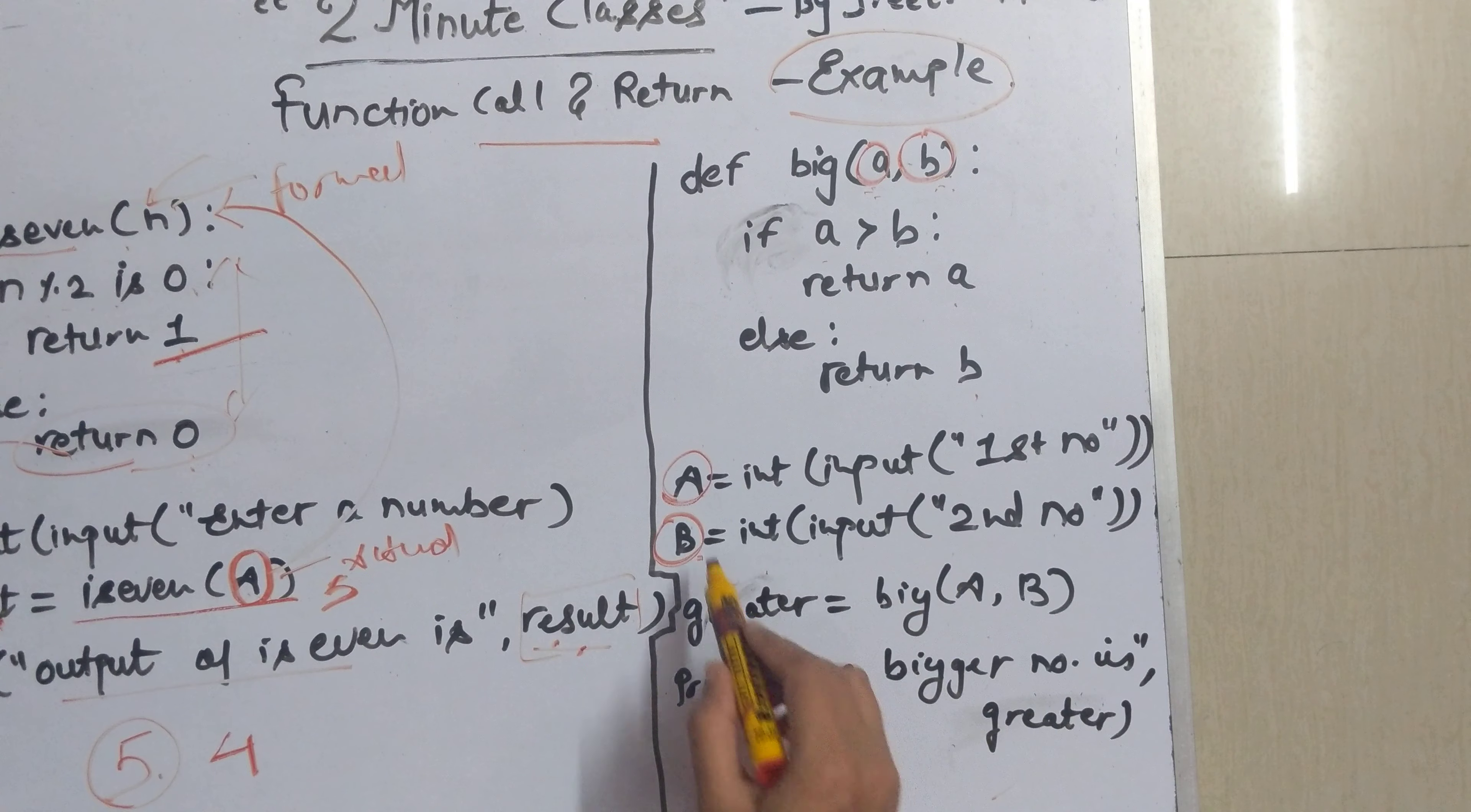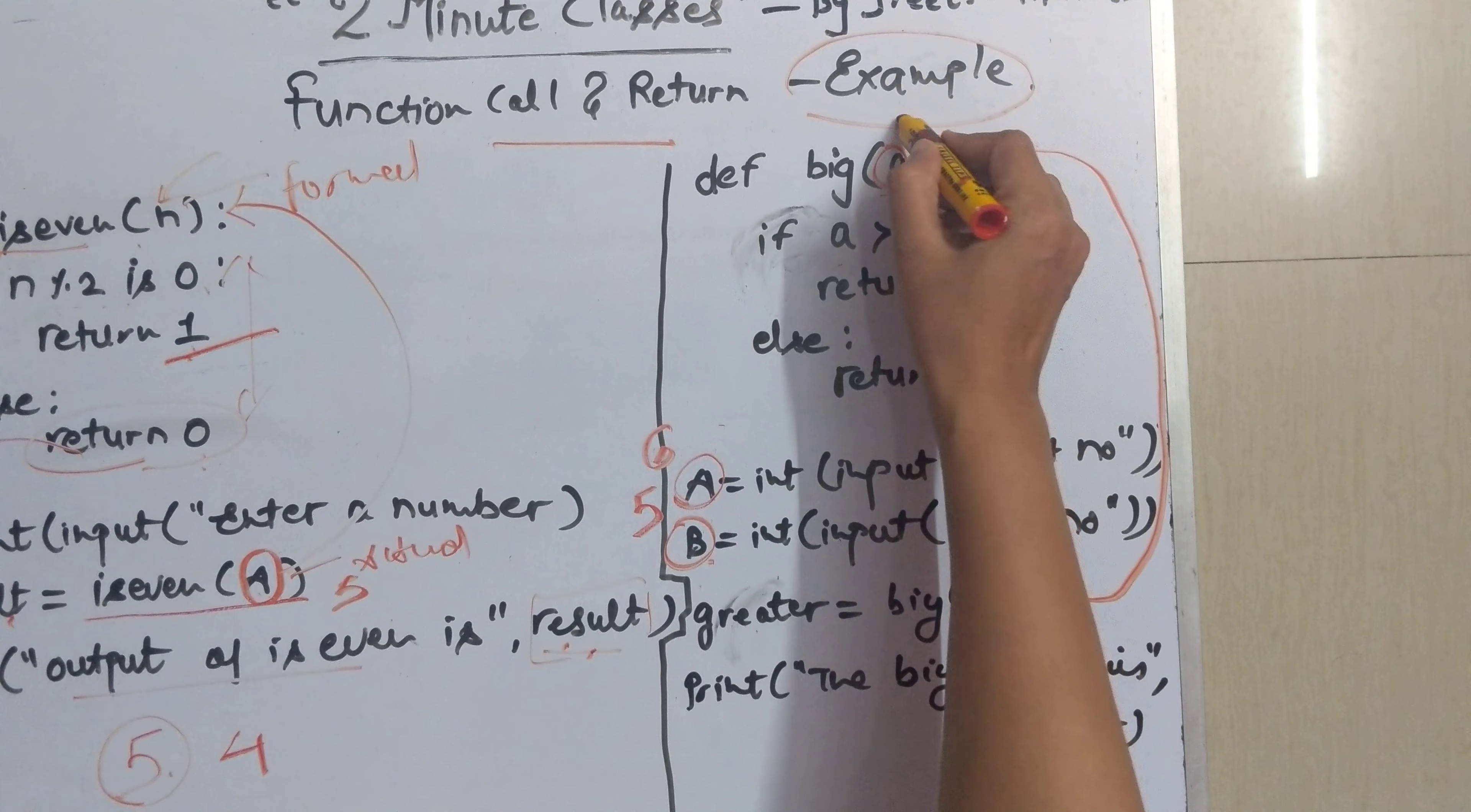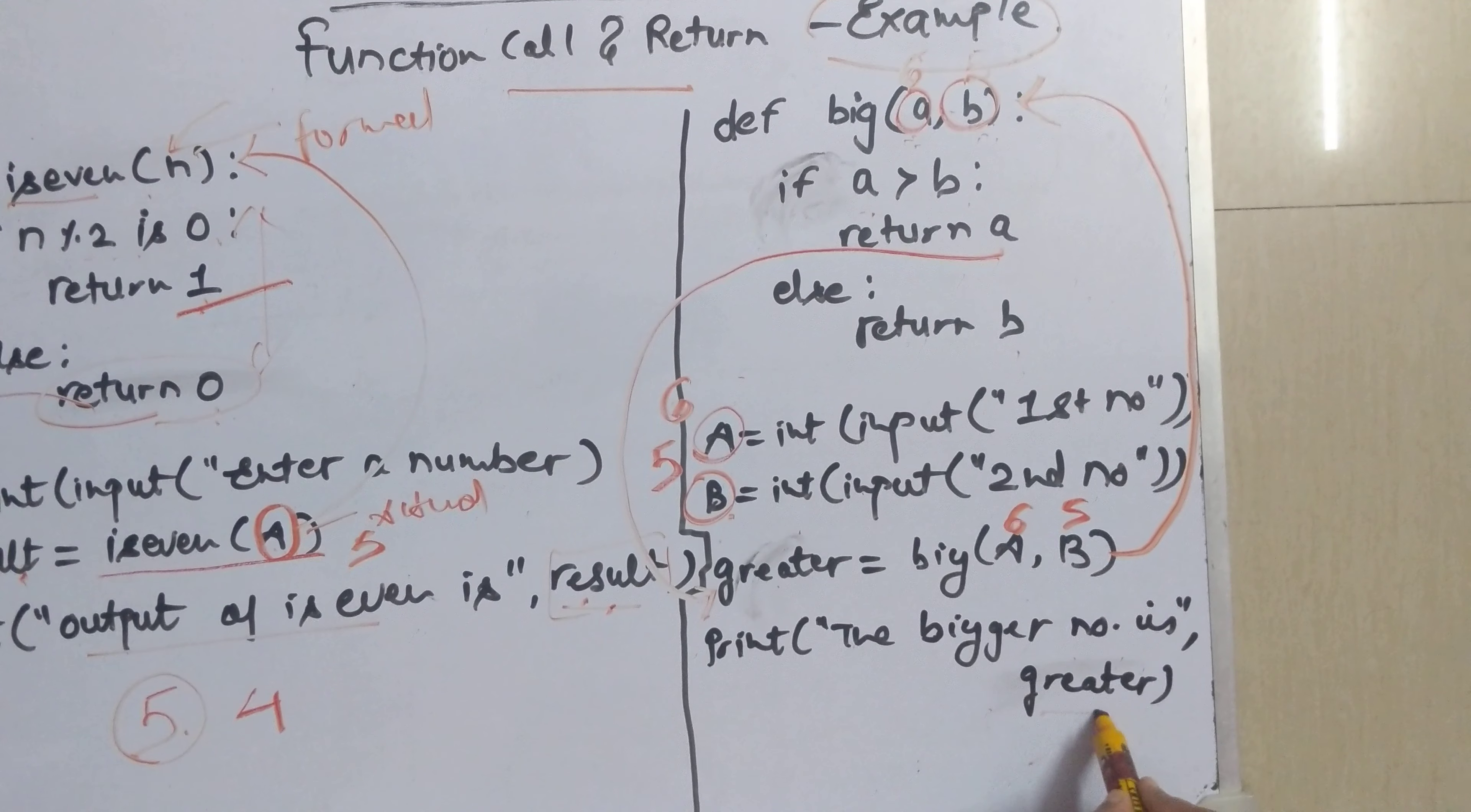So how this program will execute it will start from here. It will take the values a and b. Suppose I have entered a as 6 and b as 5. It will be called from here. So the control will go here. Now this will become 6 and this will become 5. And after this it will find out that a is greater. So it will return the value of a to the calling portion that is in the greater variable. And it will print the bigger number is 6.